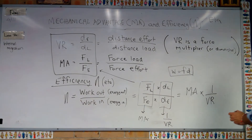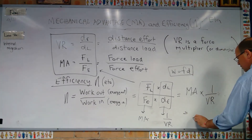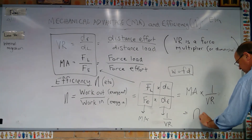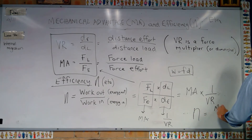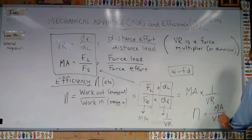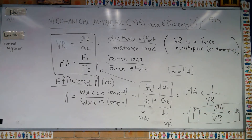This gives us the final equation: efficiency eta equals MA over VR. Multiply by 100 to express it as a percentage. That is the equation we need to burn into our memory.